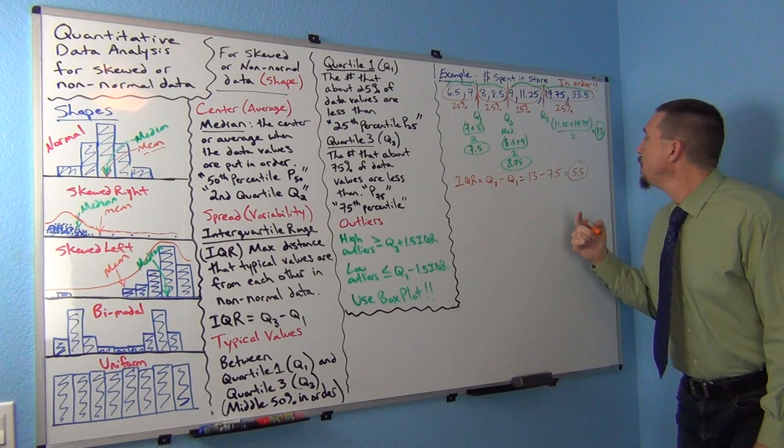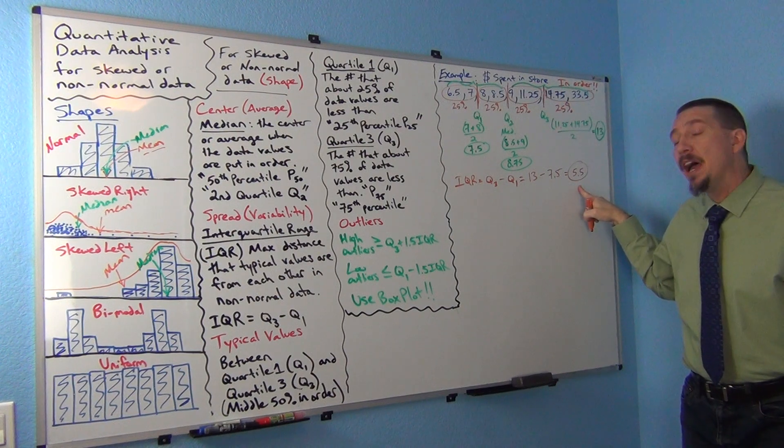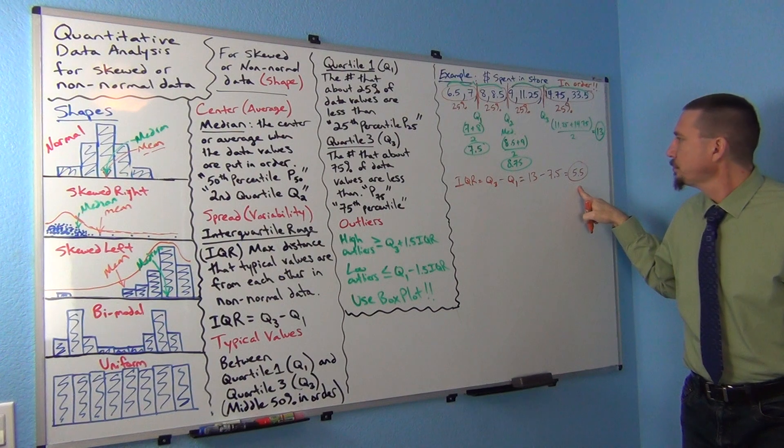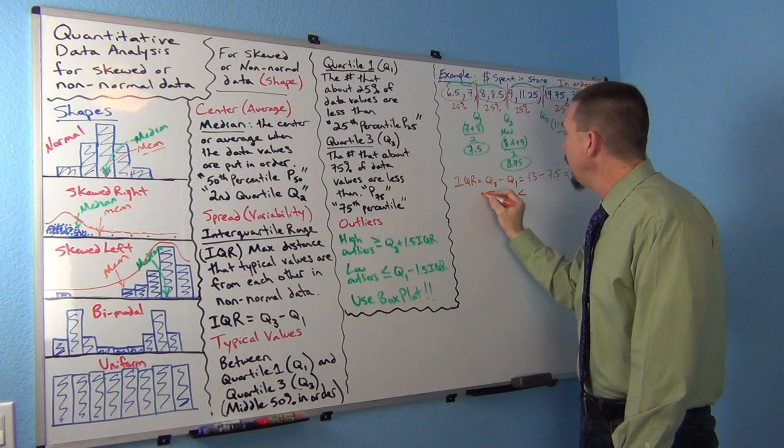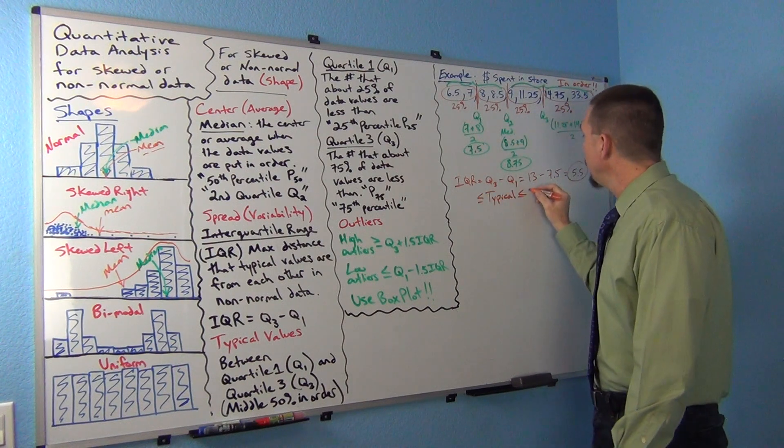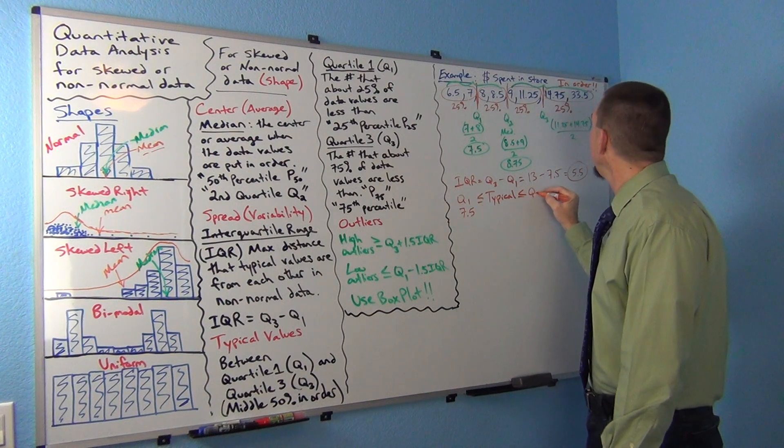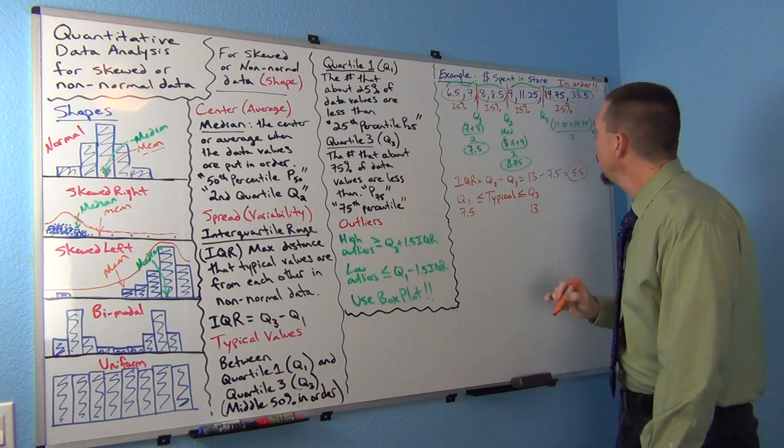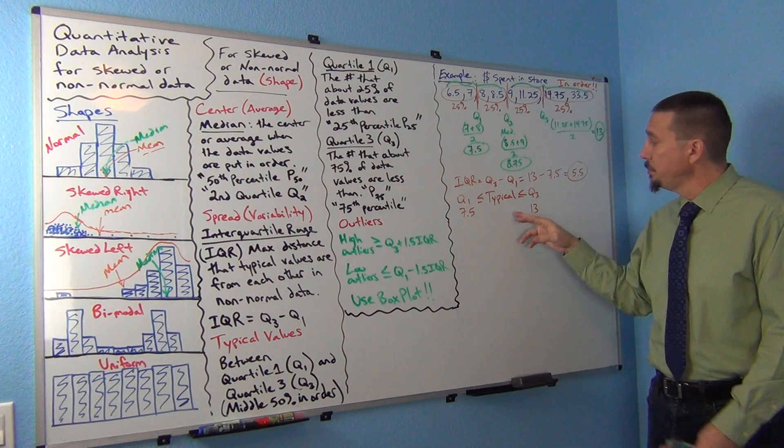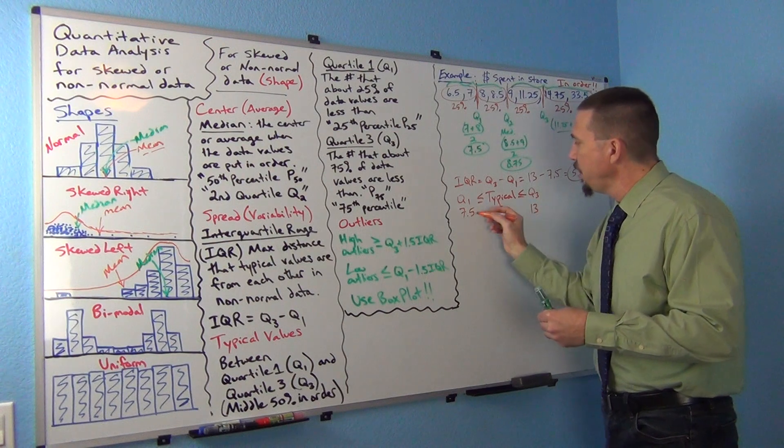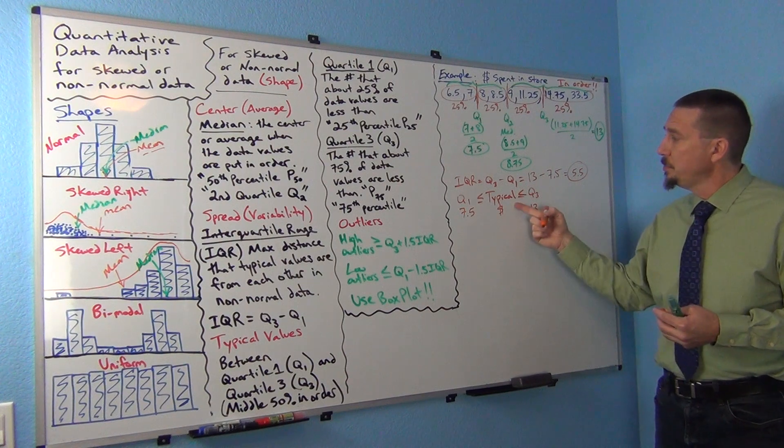So typical values, typical dollar amounts spent in the store are within $5.50 of each other. We also said that typical values will be between quartile one and quartile three. So quartile one was $7.50 and quartile three was $13. Typical dollar amounts spent in the store will be between $7.50 and $13.